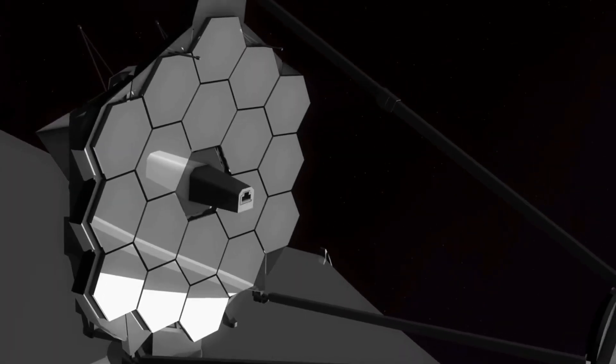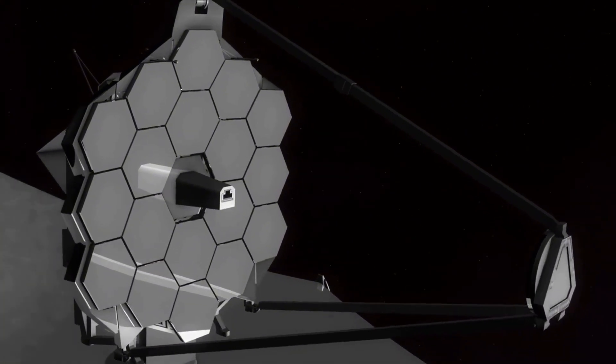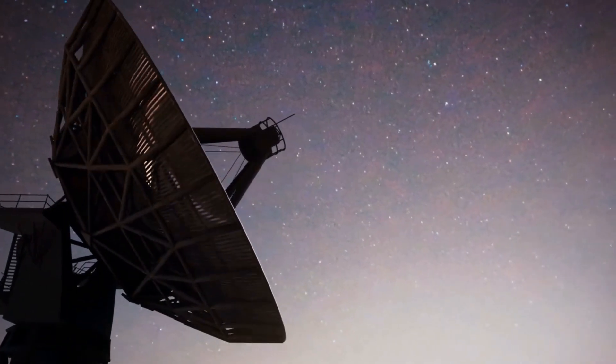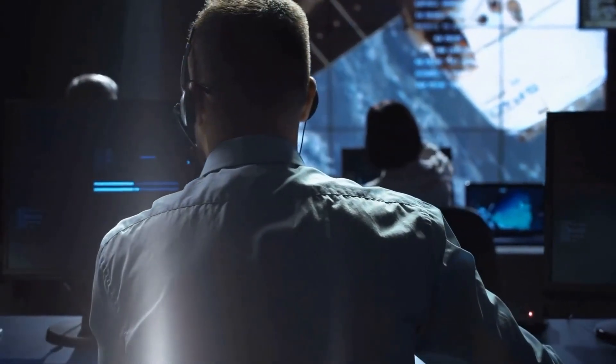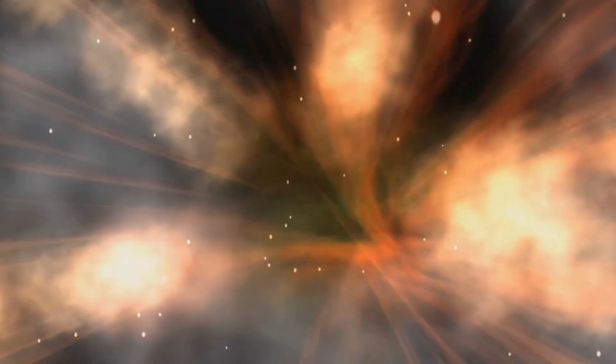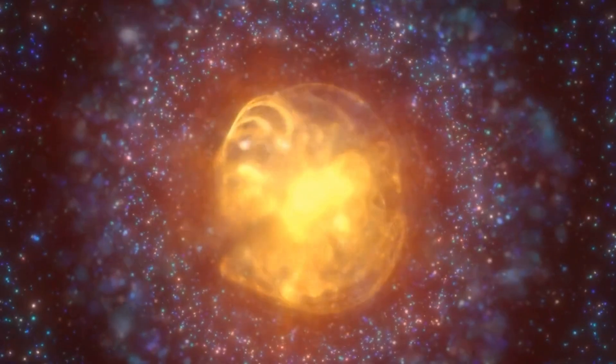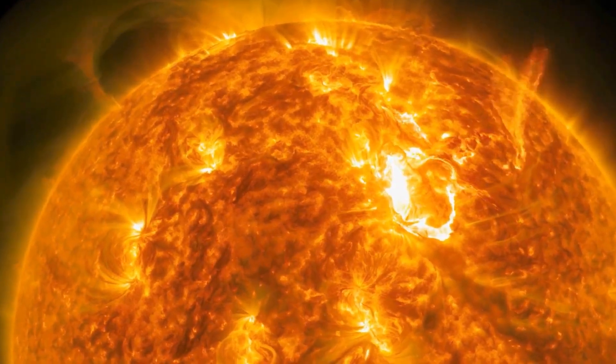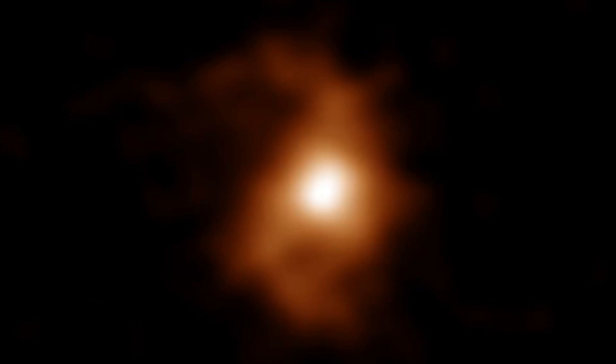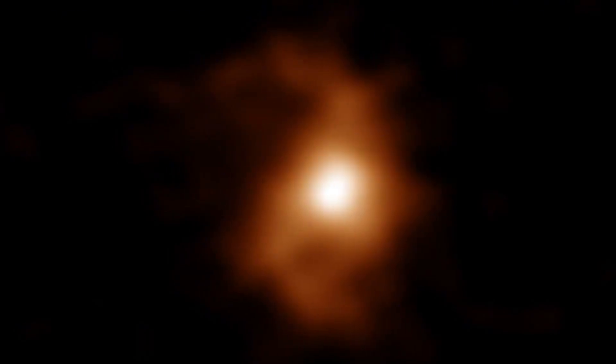Now, with Webb's unmatched infrared capabilities, we're seeing signs no telescope has ever revealed: indicators of real-time collapse, massive discharges of energy, surface layers boiling and twisting, magnetic fields spiraling into chaos. Betelgeuse isn't just dying, it's transforming before our eyes.